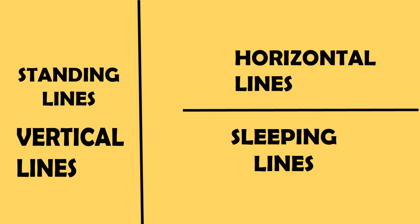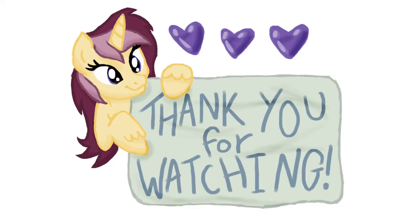So students, today we learnt about standing lines and sleeping lines. Standing lines are called vertical lines and sleeping lines are called horizontal lines. That's all for today — see you next week. Thank you very much!